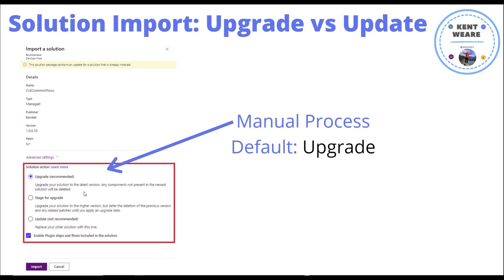When you use update, it essentially says: for each of the components listed in my solution package, I'll update them in prod if they're there. If a component isn't in my solution package but it's already in prod, it will remain there. So in that delete scenario, that fifth component would remain in production. That's a nuance you need to understand.